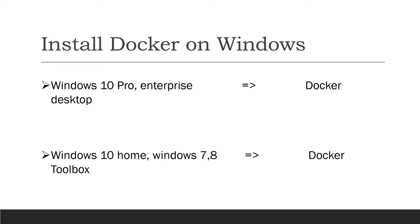Before installing Docker on Windows, you need to find out which Windows version you are using. For example, if you have Windows 10 Pro edition or Enterprise edition, you can install Docker Desktop. If you are using Windows 10 Home, or Windows 7 or 8, then you need to install Docker Toolbox.